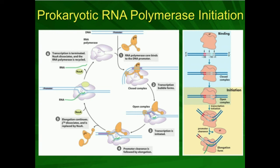Once the transcription bubble forms, transcription is initiated. Once elongation starts — when you actually begin making the RNA — the sigma factor dissociates and is replaced by another protein called NusA. NusA binds to the RNA polymerase and transcription proceeds. Eventually, transcription is terminated, which means it stops, and there are different mechanisms by which that happens. Once terminated, NusA comes off and the RNA polymerase also dissociates from the DNA, releasing the RNA.